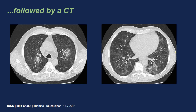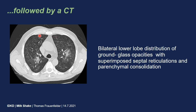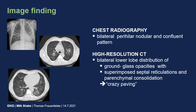Afterwards, a CT was performed that showed bilateral, more lower lobe distributed ground glass opacities with some consolidation and some reticulation and septal thickenings. In summary, we have a chest radiograph showing bilateral perihilar nodular and confluent pattern with ground glass opacities, and on the HRCT we have a bilateral lower lobe distribution of ground glass opacities with superimposed reticulation and parenchymal consolidation, which is also well known as crazy paving.